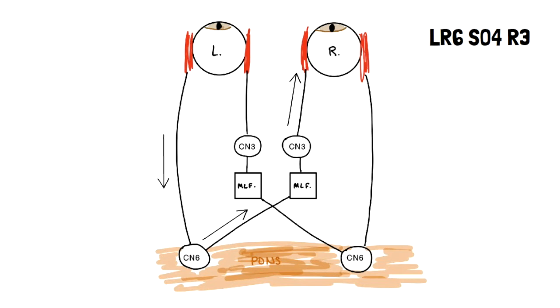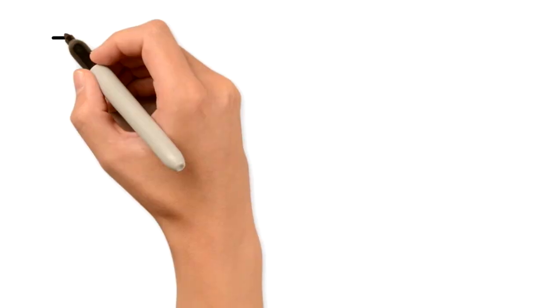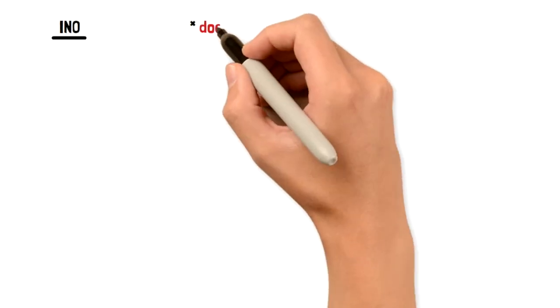This is in a healthy person. Now when someone has INO that last muscle, the medial rectus of the eye, cannot adduct and that right eye stays midline on lateral gaze. And that's what INO essentially is.